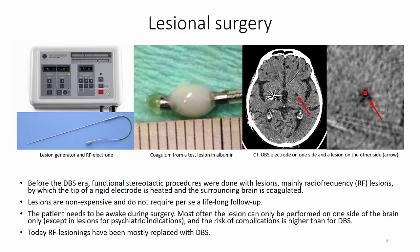Before the DBS era, functional stereotactic procedures were done with lesions, mainly radiofrequency lesions, by which the tip of a rigid electrode is heated and the surrounding brain is coagulated. Lesions are non-expensive and do not require per se a lifelong follow-up. The patient needs to be awake during surgery. Most often the lesion can only be performed on one side of the brain, except in lesions for psychotic indications, and the risk of complications is higher than for deep brain stimulation. Today, radiofrequency lesionings have been mostly replaced with DBS.